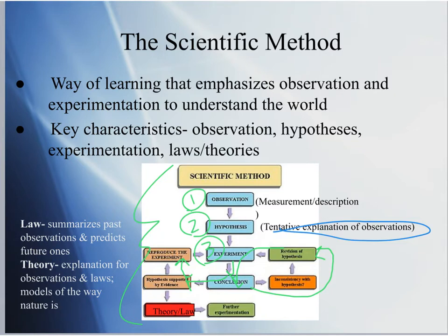Repeatability and reliability are super important in science. When you do get repeatable conclusions that are very reliable, they become what are called theories and laws. A law summarizes past observations and can predict new ones. A theory is an explanation for the observations and laws — a model of the way nature works.